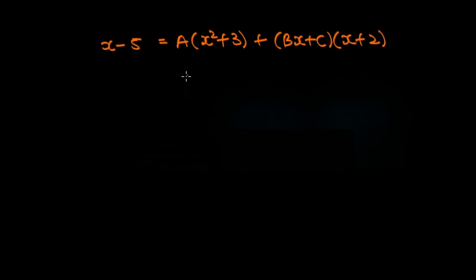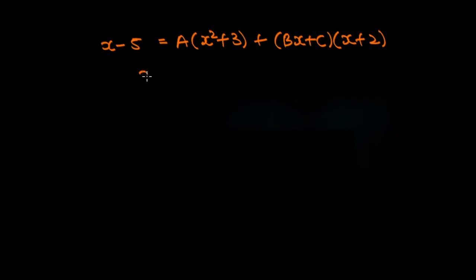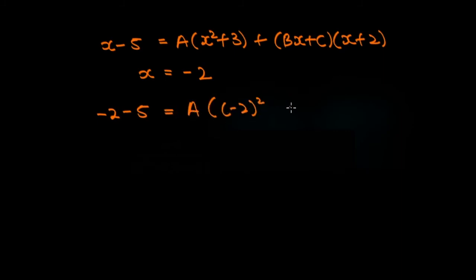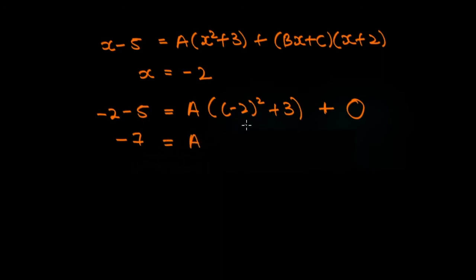Is there a value of x for which x plus two is equal to zero? Yes — that's when x is equal to minus two. So x equals minus two is going to be our choice for x. On the left, we have minus two minus five, equal to a times minus two squared plus three, plus bx plus c times zero, which gives zero from that term. So minus seven equals a times four plus three, which gives minus seven equals seven a, therefore a is equal to minus one.